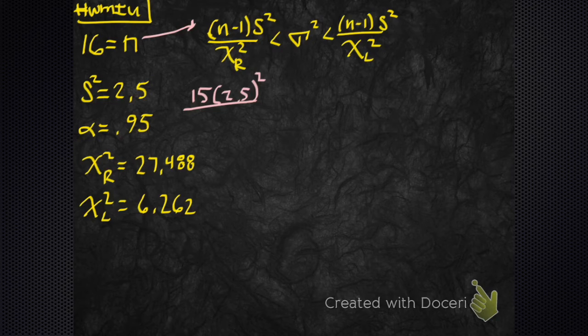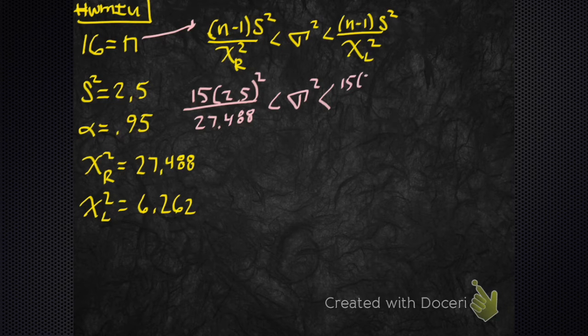And then 2.5. Where's that? That's the number we made up. And then chi-right, that's 27.488. That's smaller than the variance.